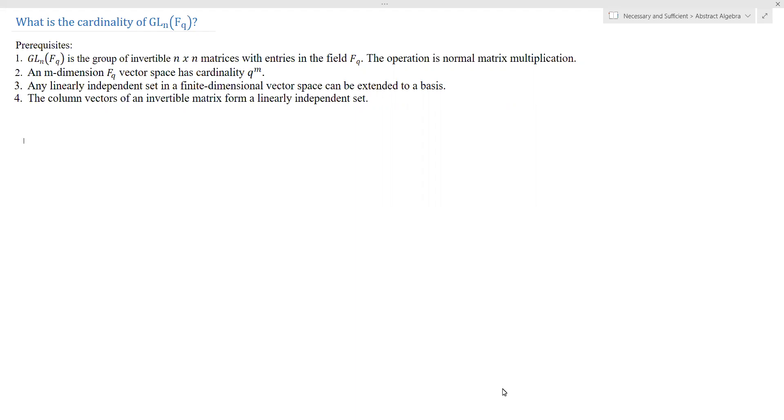This is the general linear group over FQ. It is the group of invertible n by n matrices with entries in the field FQ. So this is the finite field with Q elements. And of course, the operation is just normal matrix multiplication.